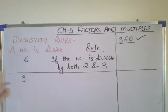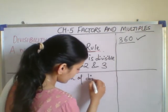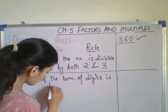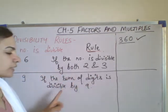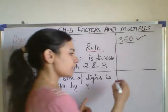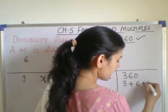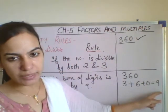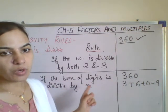Now let us check the divisibility of 9. The rule is: if the sum of the digits is divisible by 9, then the given number is divisible by 9. Let us take 360. Adding the digits: 3 plus 6 plus 0 equals 9. Since 9 is divisible by 9, this number is divisible by 9. Remember, a similar rule applies for divisibility by 3 as well.